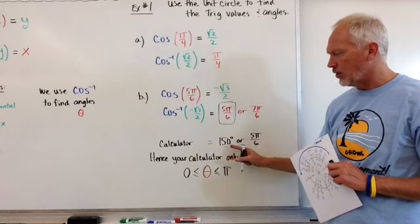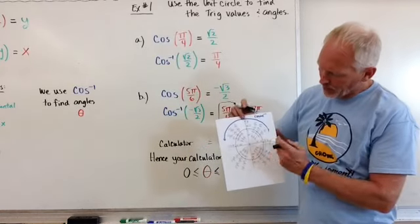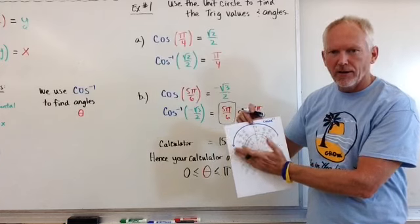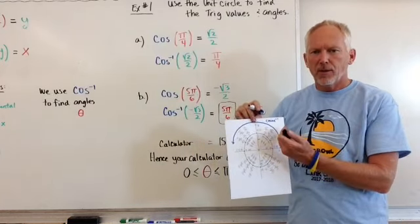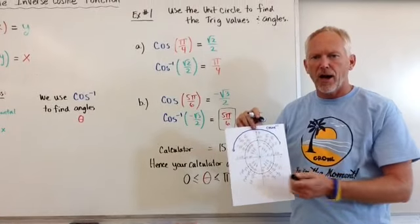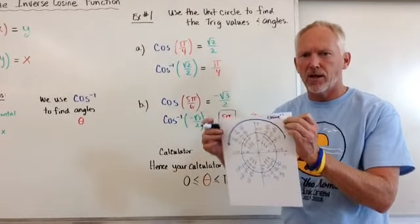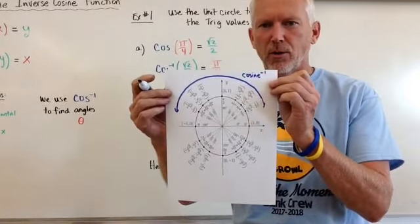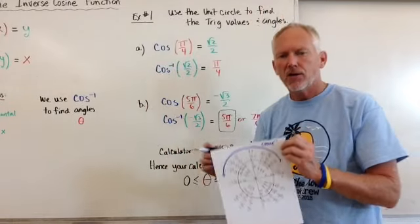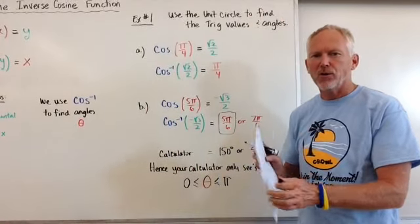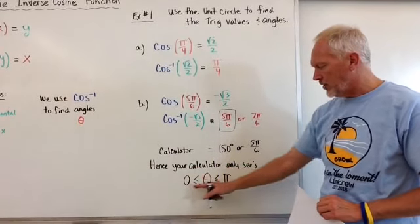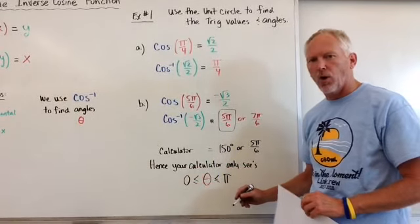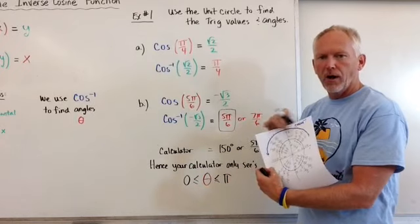Your calculator also will only calculate from 0 to pi. So on your unit circle, choose a different color, but highlight from 0 to pi and label it as cosine inverse. Do that because then you'll know those are the values that we're looking for. Your calculator only sees 0 to pi, so that is quadrants 1 and 2.